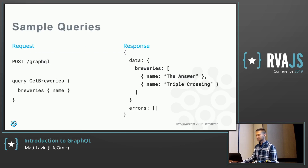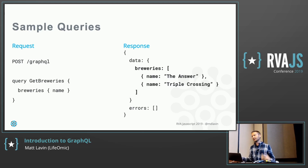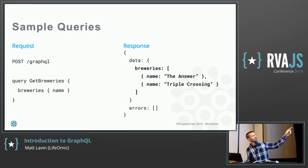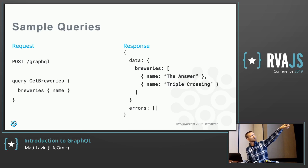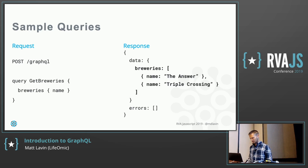What does that look like? You POST to your GraphQL endpoint with a query — in this case, get breweries. What you're saying is you want a list of all the breweries and you want their names. The response that comes back says, here's your data: breweries is going to match the query structure, the names come back — my favorites, The Answer and Triple Crossing — and no errors at the bottom.